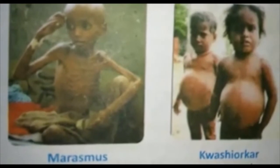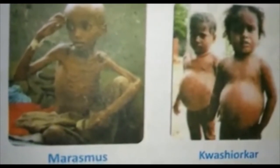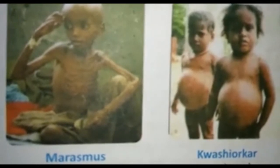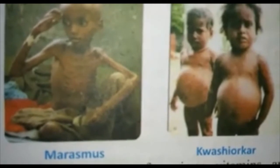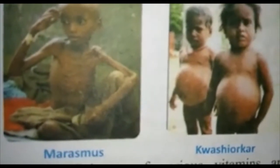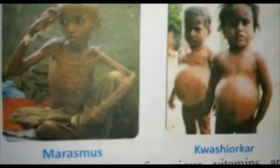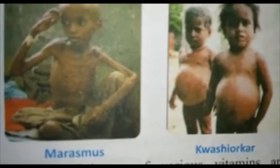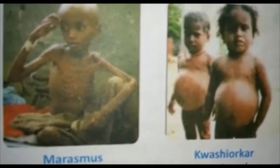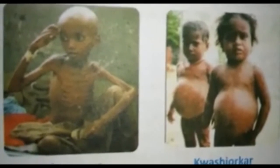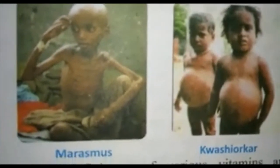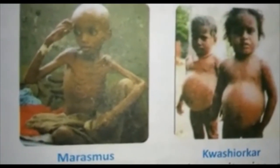Next, kwashiorkor. This disease is caused by continued deficiency of protein in the diet. When a child stops breastfeeding and the externally supplied diet is deficient in protein, the child suffers from kwashiorkor. This disease is characterized by poor body and mental growth, reduced vigor and increased sensitivity to infection, cracked and scaly skin, puffy facial expression and swollen abdomen.